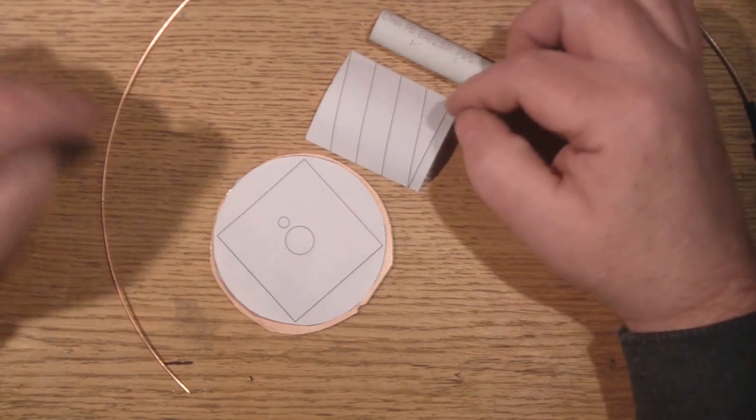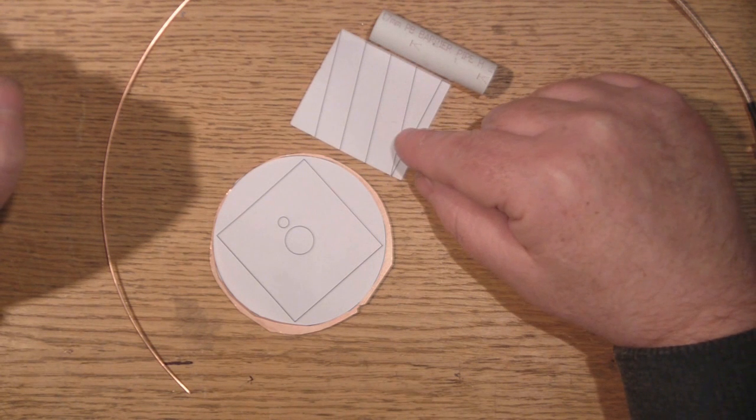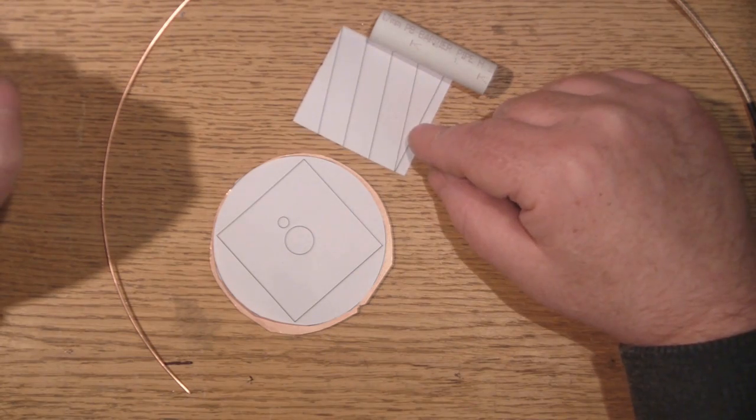You're going to have to download the template which will be a link in the description. I've already cut the template appropriate so we've got a four turn helical antenna here.